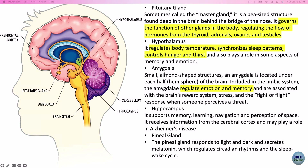The amygdala is a small almond-shaped structure located under each half of the brain, included in the limbic system. It regulates emotions and memory, and is associated with the brain's reward system, stress, and fight-or-flight response. So the amygdala is very much involved in your stress and fight-or-flight reactions.